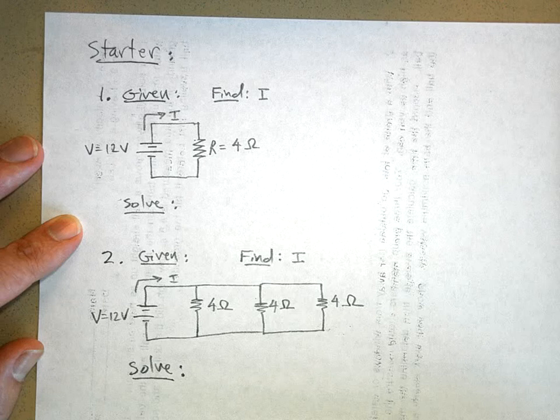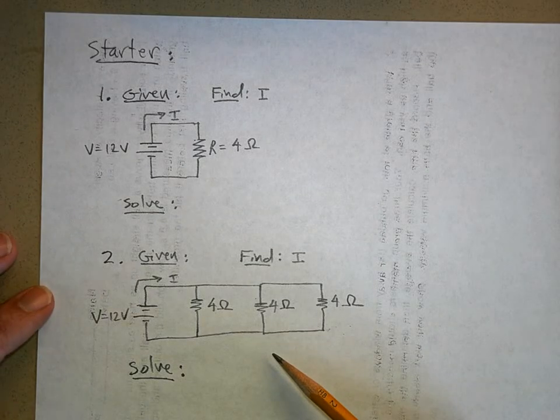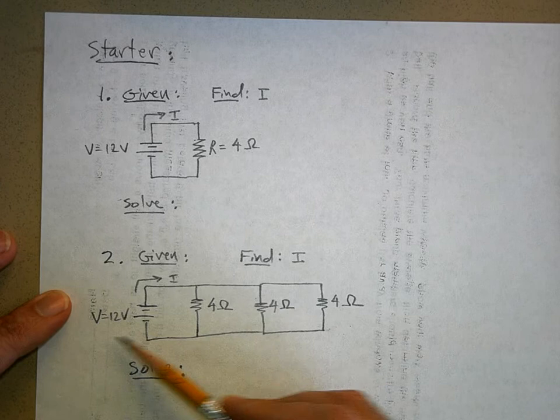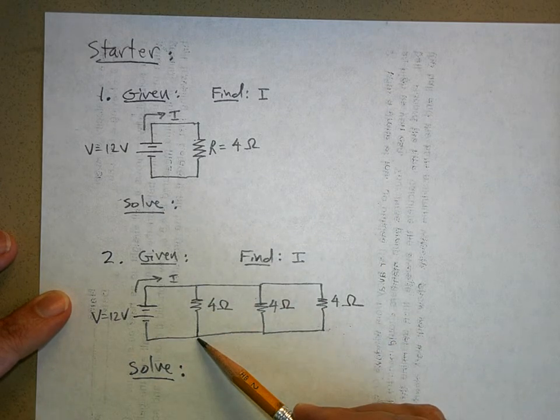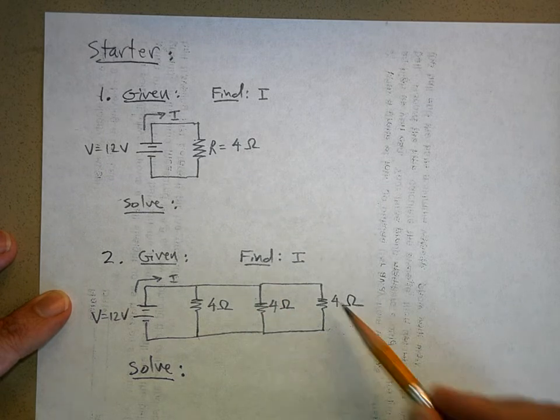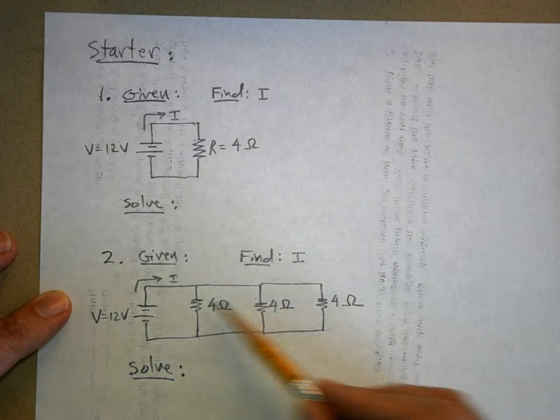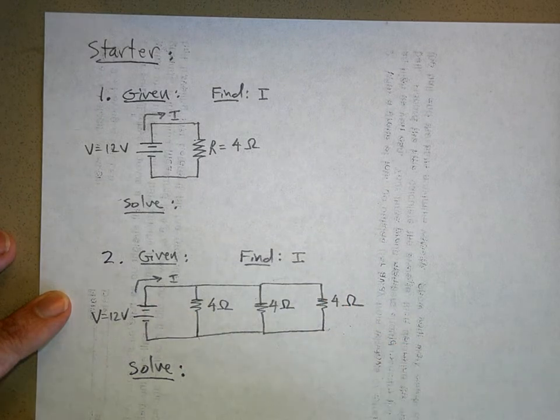Over here on number two, we got the same battery, but now we've got the same 4 ohm resistor with another 4 ohm resistor and another 4 ohm resistor in parallel with it. I want to know how much current is coming out of that battery.